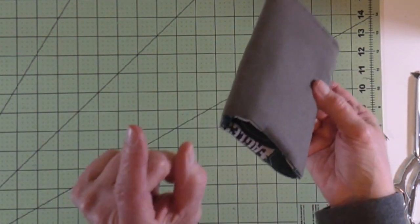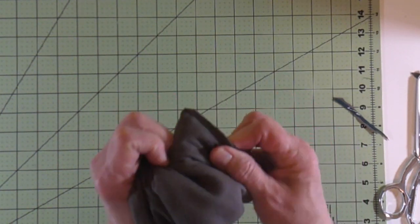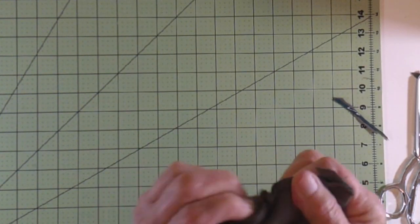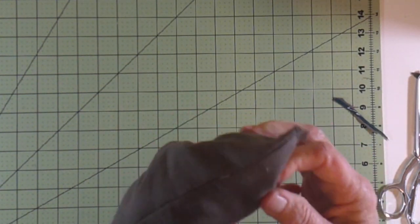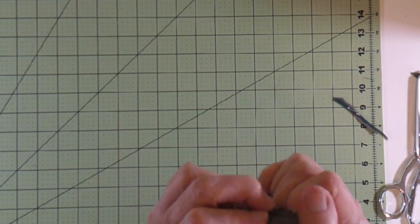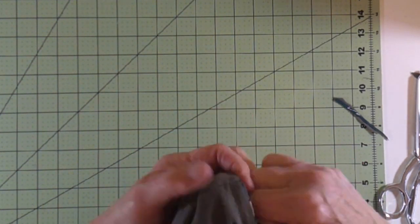Now you're going to stick your thumb all the way into that corner and then put one of your other fingers here and just push that corner in. Do the same thing for the other bottom corner. And then pull that bottom all the way out.